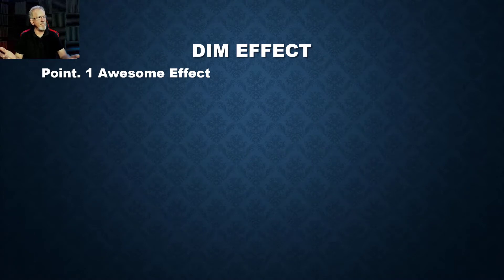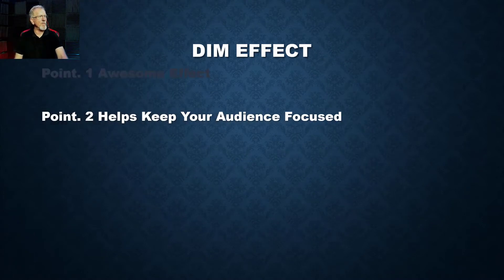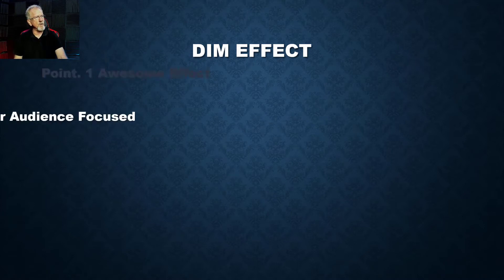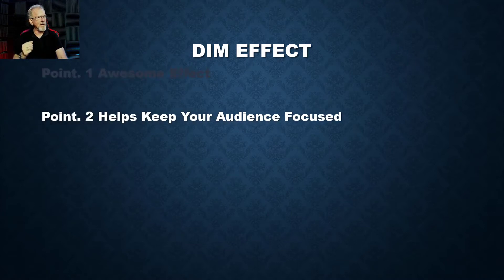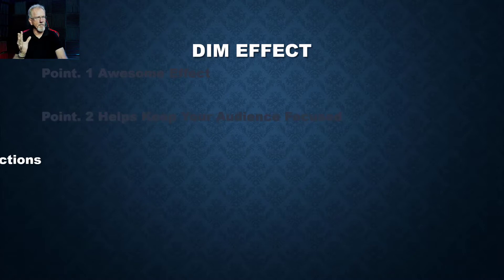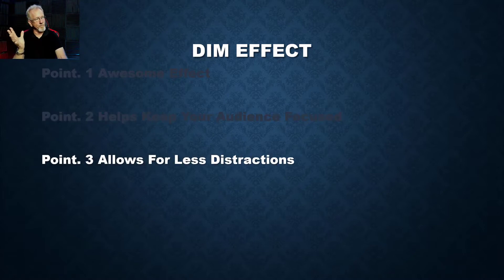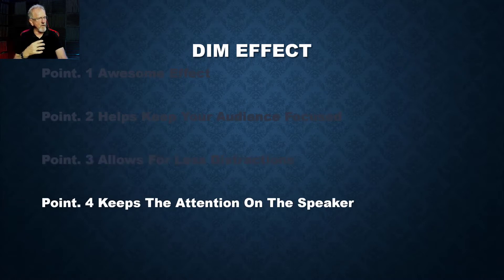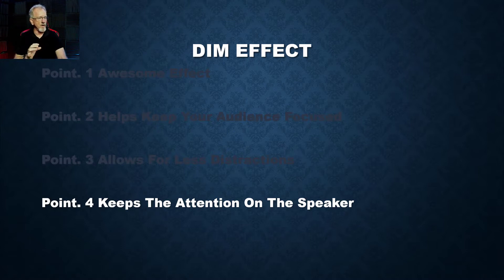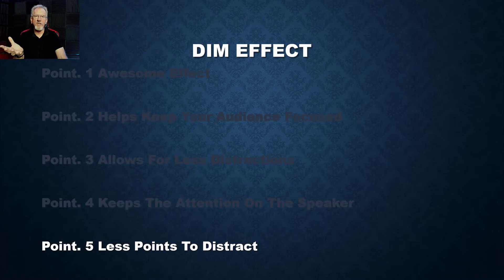The first one is point one — it's an awesome effect. And then point two helps to keep your audience focused. You see how point one was highlighted, then when I went to point two, it dulled down and point two highlighted up as it flew in. Point three allows for less distractions, which is true — it's doing the same thing again. And point four: the attention is on the speaker, not on what the speaker is actually saying, not on all the other words on the screen. It's less points to distract.